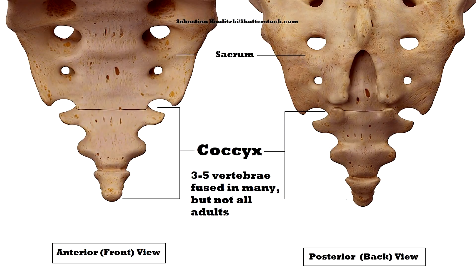Now let's talk a little bit about the anatomy of this bone. In the average skeleton the coccyx is going to consist of three to five small vertebrae which are often fused together in adults. However in some adults not all of the coccyx bones fuse together and they can remain separate, usually in two or three different segments.